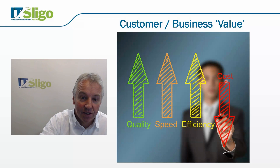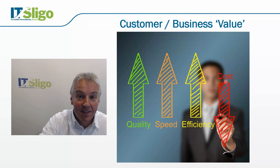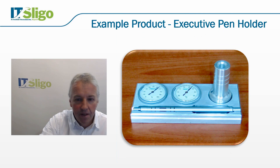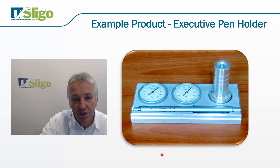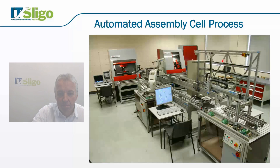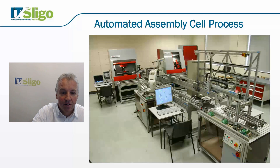We need to look at what value means to the customer — what they are actually paying for, going back to the concept of value-add versus non-value-add. As an example product, we're using an executive pen holder manufactured in a process at the college in Sligo. The pen holder includes the pen, a thermometer/hygrometer for measuring temperature and humidity, and a small holder for the pen. There is an automated assembly process which goes through a warehouse, different process steps, a robotic assembly station, a production control station, and an inspection station.